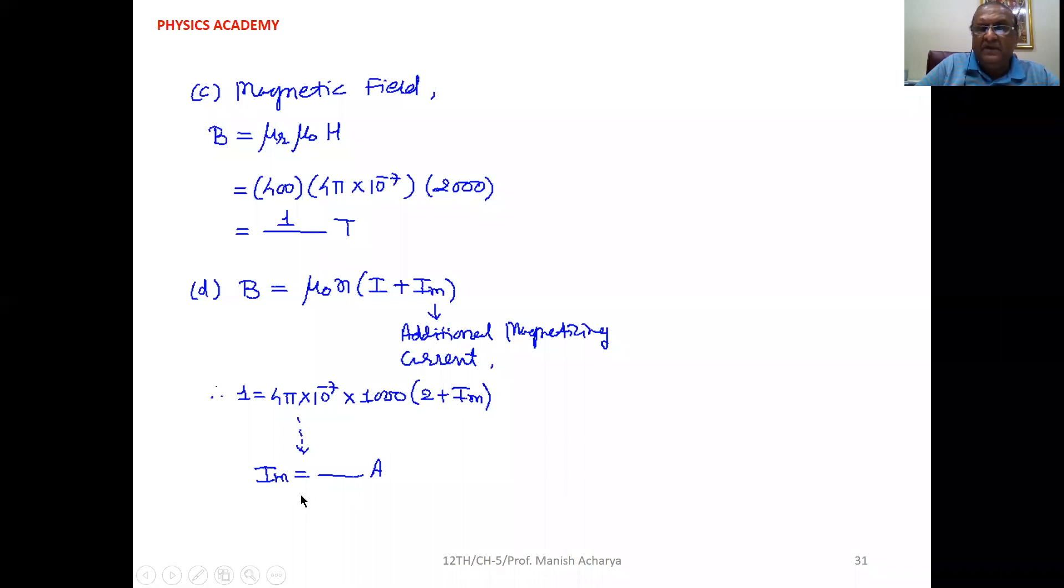Now if you solve this, then your I_M will be a large current, of the order of approximately very close to 800 ampere. Clear to all of you.